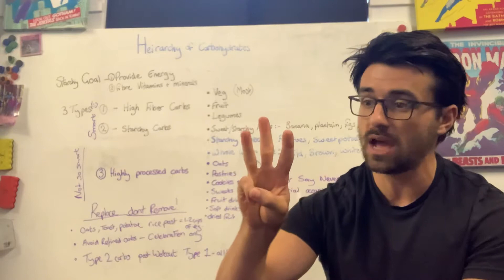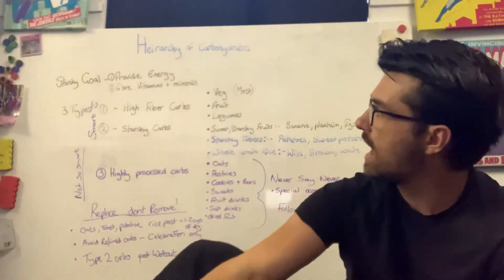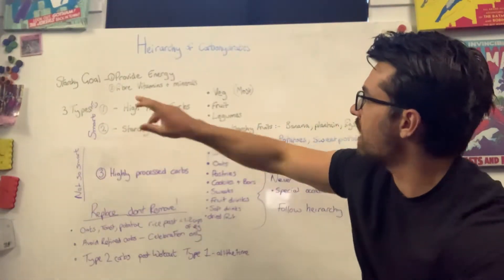So there's three different types of carbohydrates, type one, two, and three. Believe it or not, type one, two, and three, the hierarchy of carbohydrates. So right at the top of the pyramid, we've got high fiber carbohydrates.